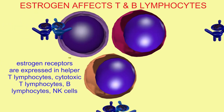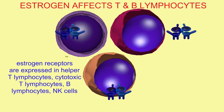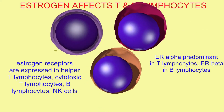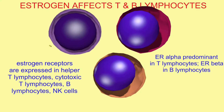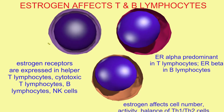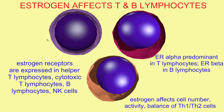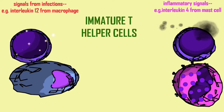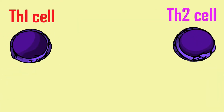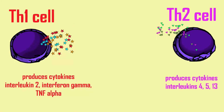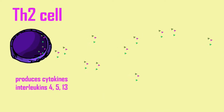Estrogen receptors are expressed in helper T lymphocytes, cytotoxic T lymphocytes, B lymphocytes, and NK cells. The receptors can be expressed in different proportions: estrogen receptor alpha is predominant in T lymphocytes, especially T helper lymphocytes, while estrogen receptor beta is predominant in B lymphocytes.